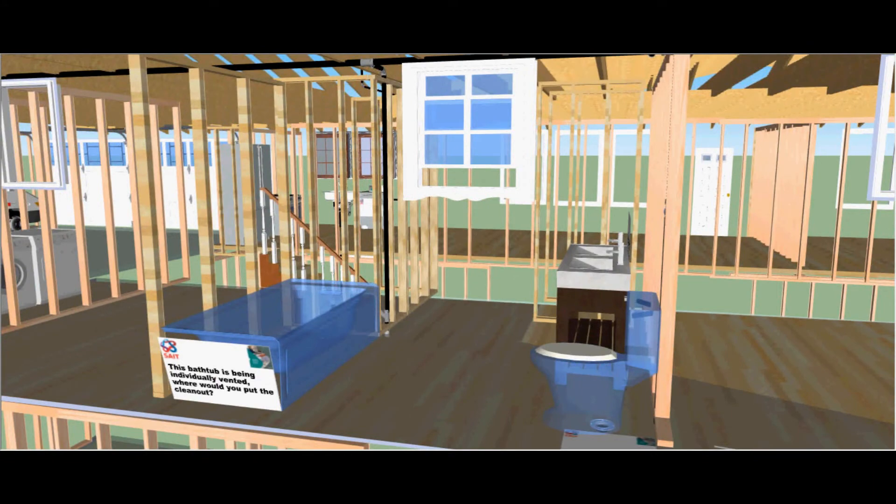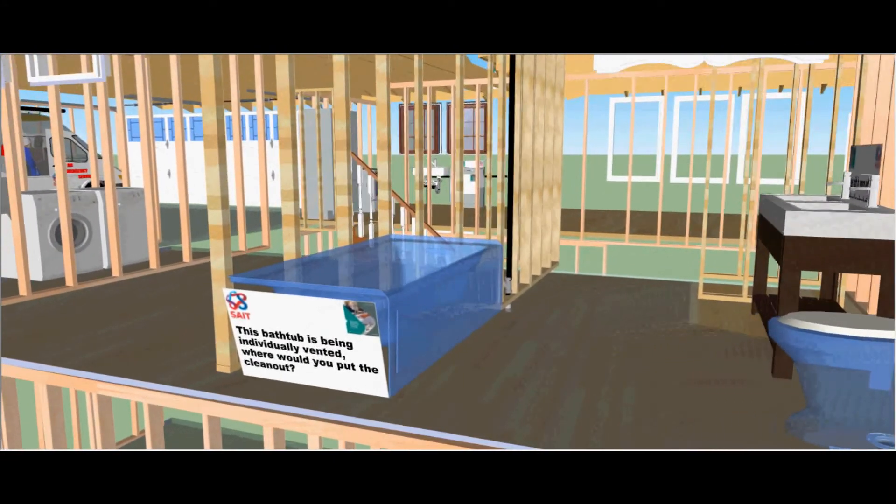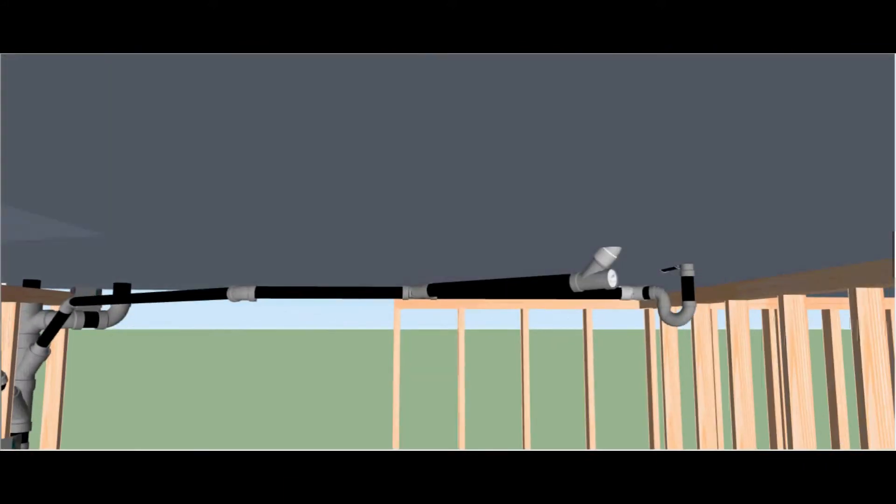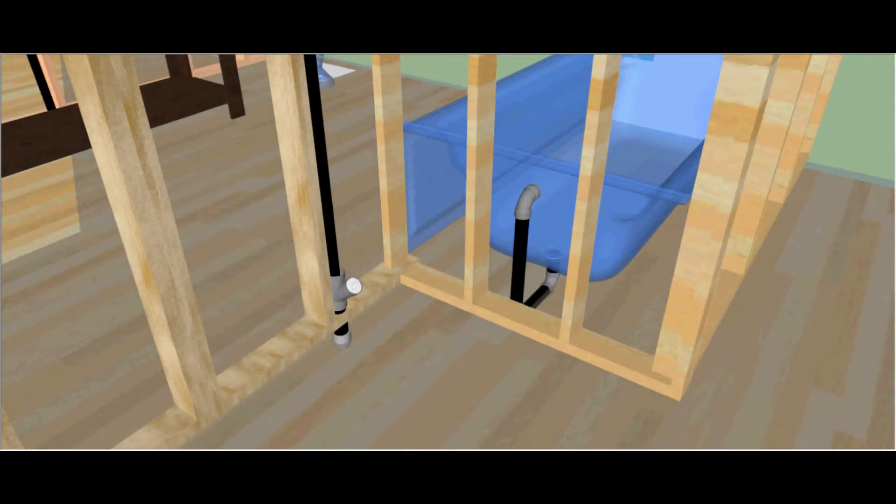This bathtub is being individually vented. Where would you put the clean out if you were to run an individual or a flat vent under the bathtub? You could run the clean out in the ceiling under the bathtub or a better choice would be to run it above for accessibility reasons.